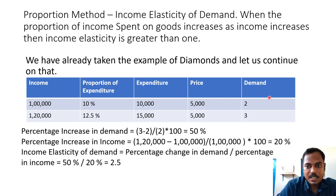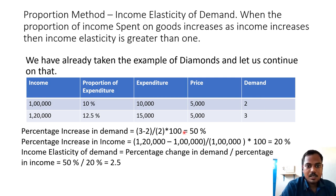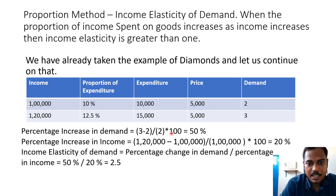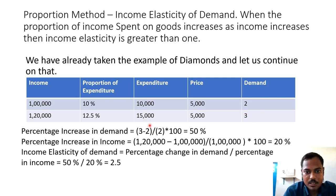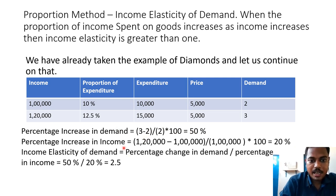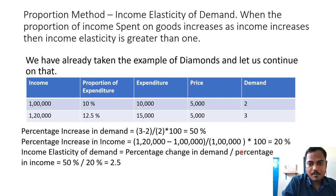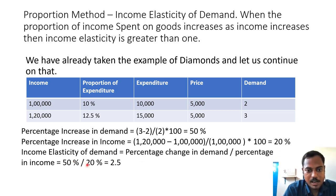Now we calculate the percentage increase in demand. The new demand is 3 units and the original demand is 2 units. So (3 − 2) ÷ 2 × 100 = 50%. The percentage increase in demand is 50%. Therefore, income elasticity of demand = 50% ÷ 20% = 2.5.